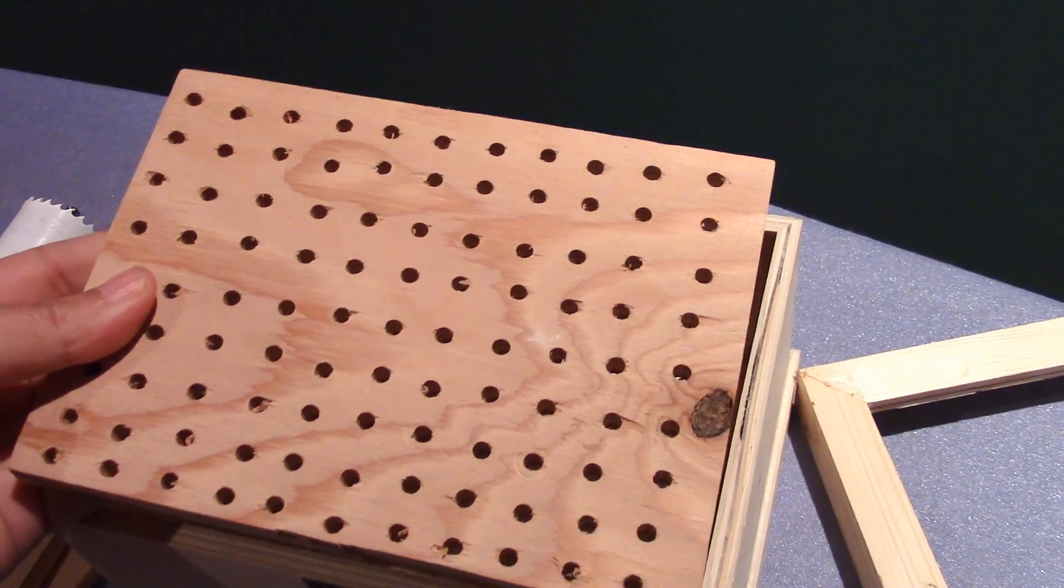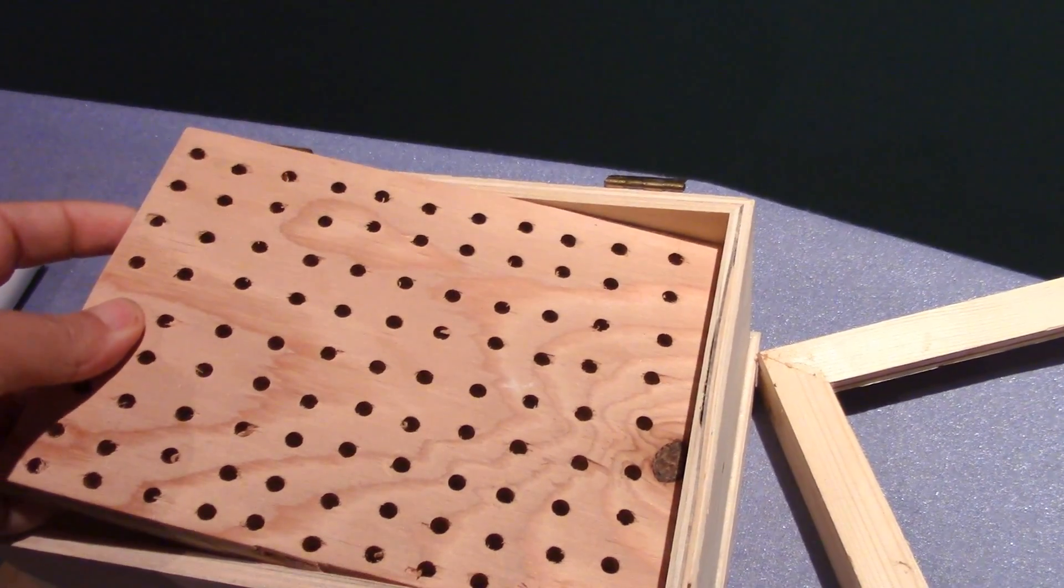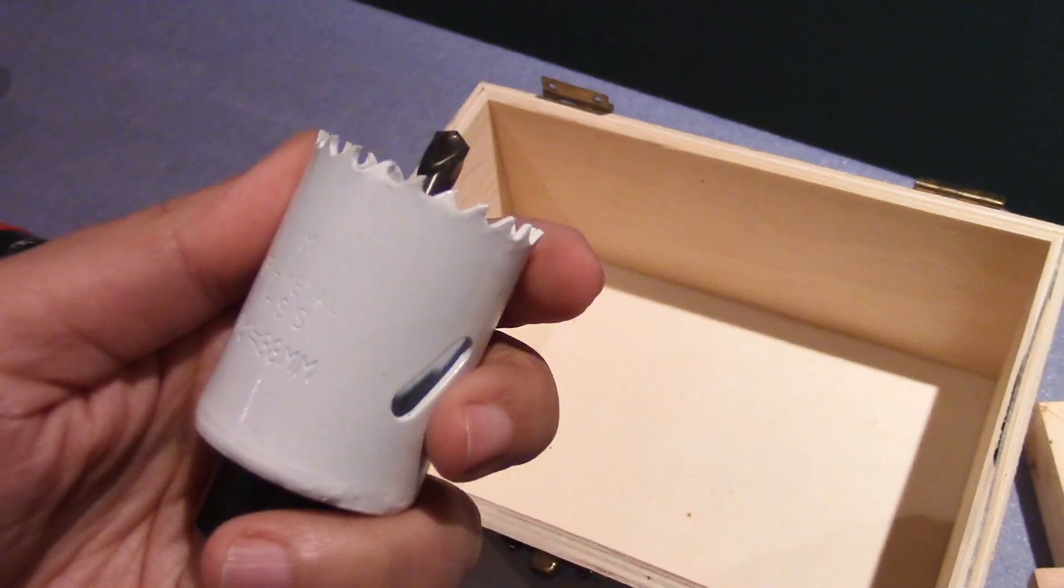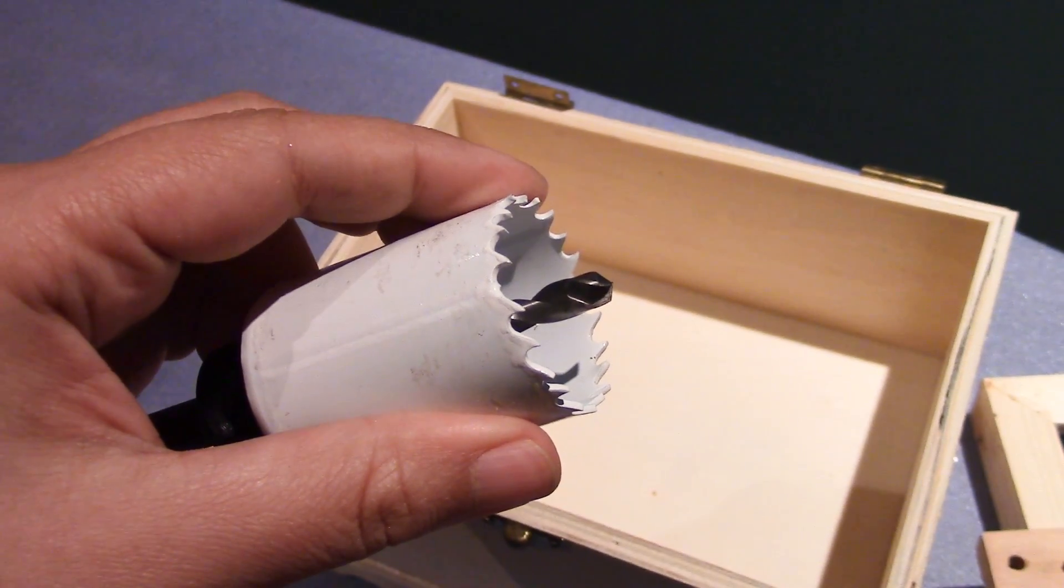A pegboard or any other piece of wood that you can use to make holes in. The important thing about this piece of wood is that it fits exactly in your box. A drill hole attachment. This size will depend on the vacuum you're using.